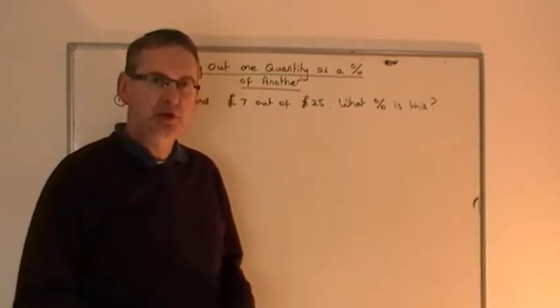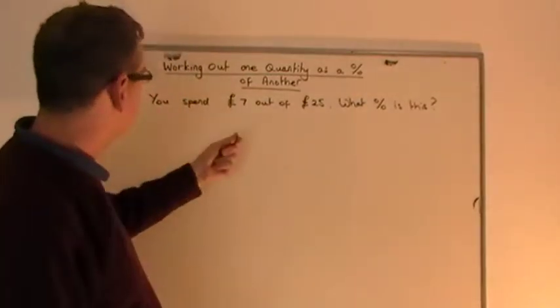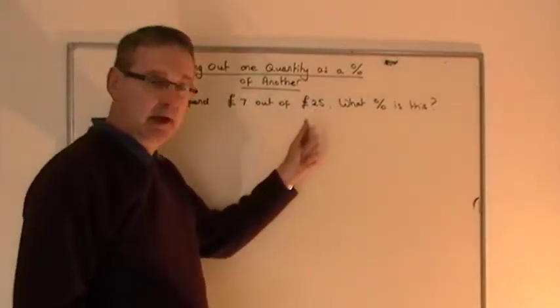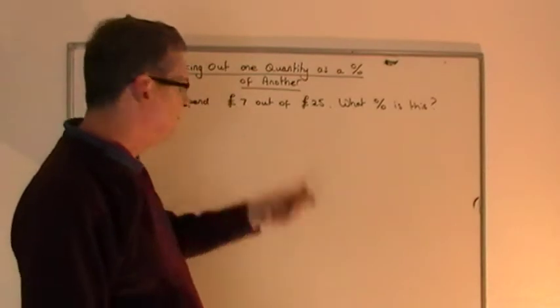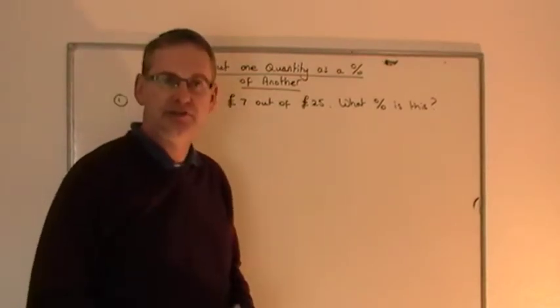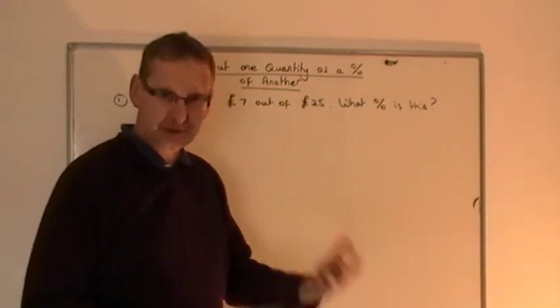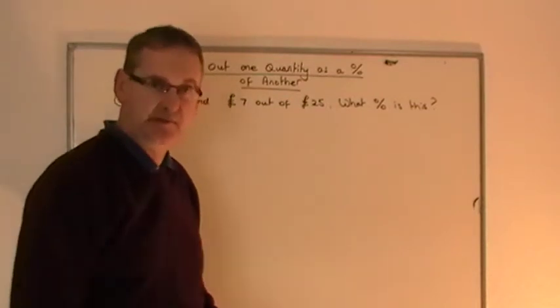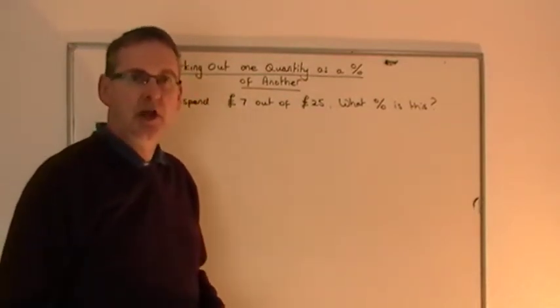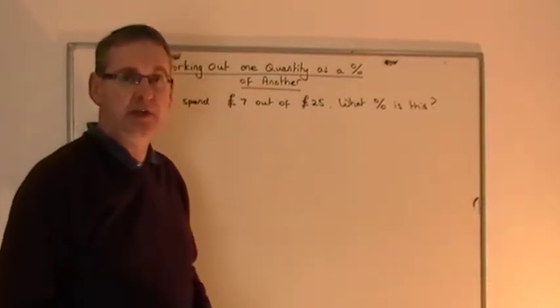So for example, you might have in this example £25 and you are spending £7 out of the £25. So you know the two amounts of money, the £25 you start with, the £7 that you're spending. And what the question is asking, what percentage of the money that you started with have you actually spent?